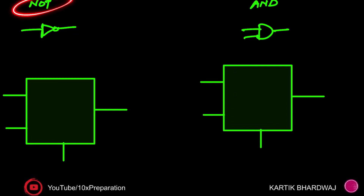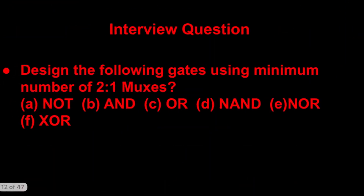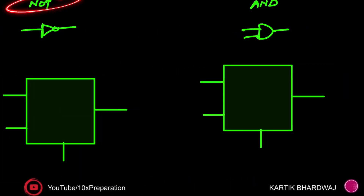Let's start with the NOT gate. The functionality of the NOT gate is: whatever the input is, it complements it. If you give zero, you get one. If you give one as input, you get zero as output. So whatever input you put in, you simply complement it.